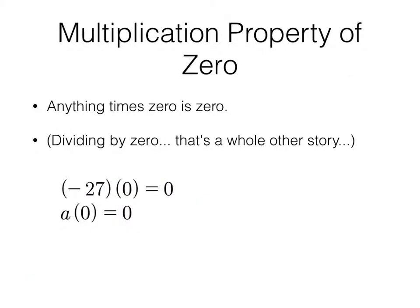Multiplication property of 0, I believe, is your last property. It is. This one is super-duper easy. Anything times 0 is 0. That's it. Negative 27 times 0. 0. A times 0. 0.